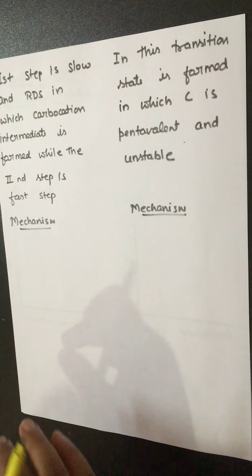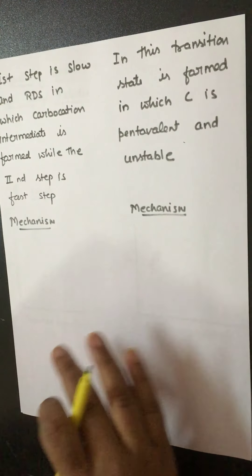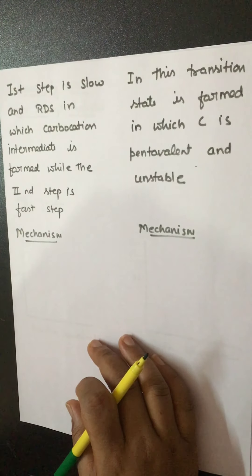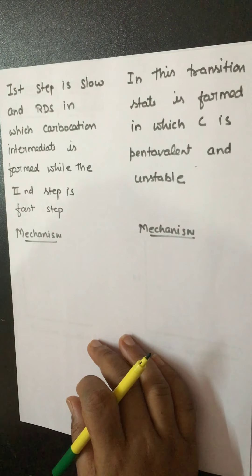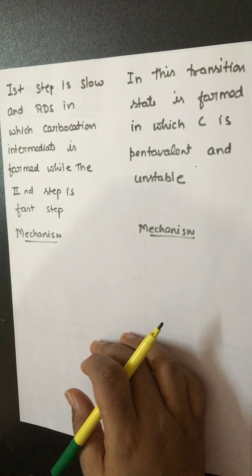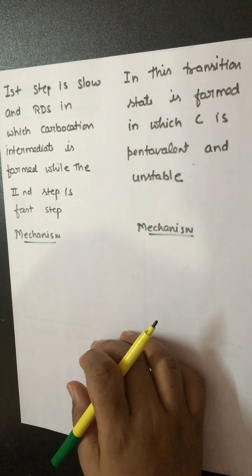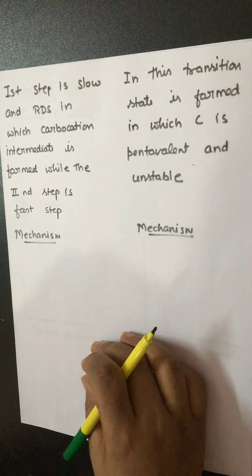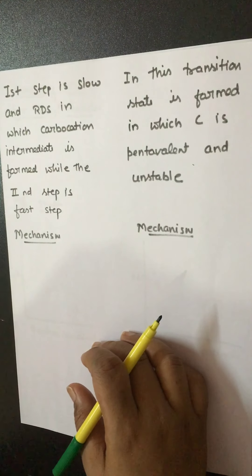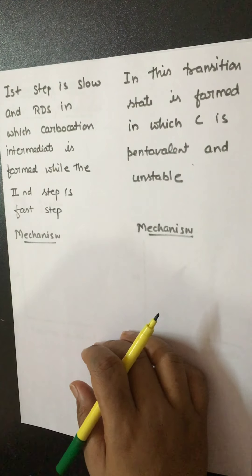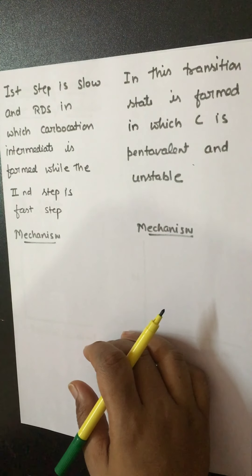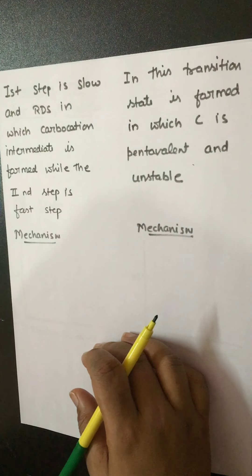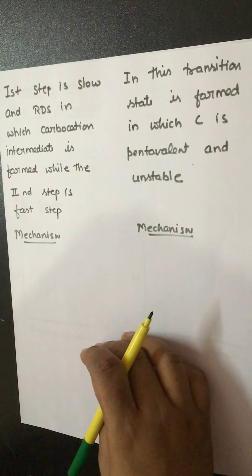In the 2-step process, the 1st step is slow and that is the RDS — the rate determining step. In SN1, the 1st step is slow and is the rate determining step, in which a carbocation intermediate forms, and then the nucleophile attacks that carbocation in the 2nd step. Whereas in SN2 type of mechanism there is a single step; a transition state forms in which bond formation and bond breaking both occur simultaneously, and carbon in the transition state is pentavalent, meaning it is unstable.